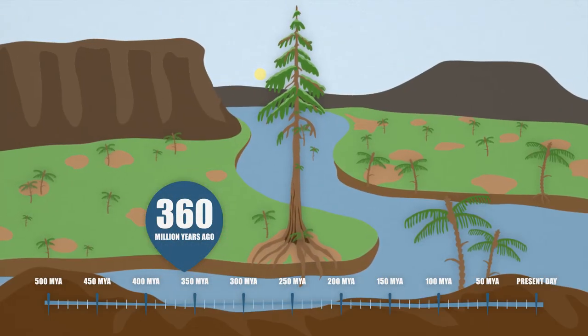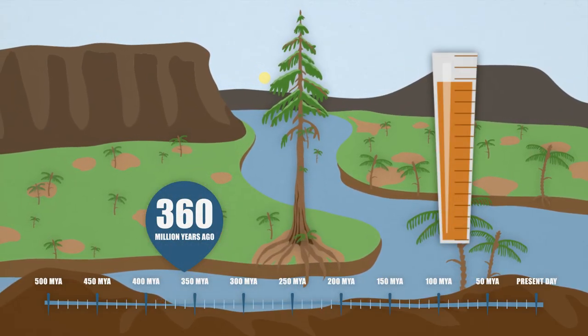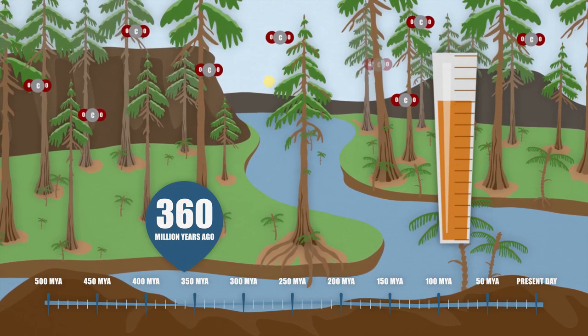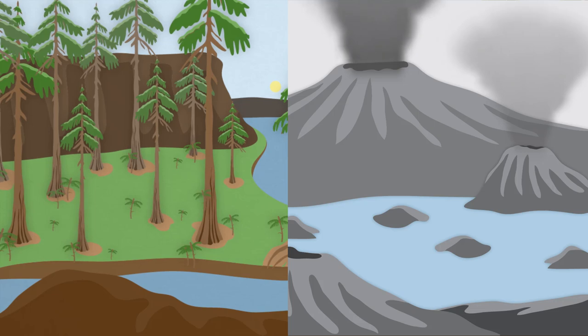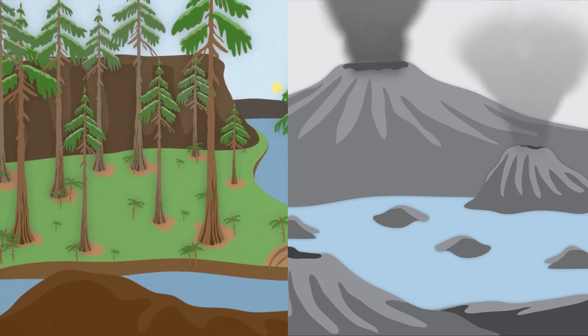The carbon dioxide in the atmosphere keeps our planet warm. So with less of it in the air the planet slowly cools down during this period. See how plants drastically transformed our planet forever?